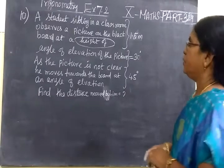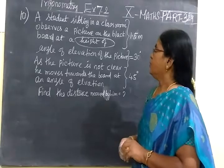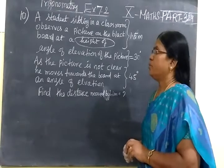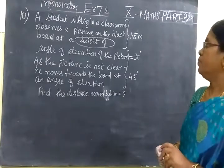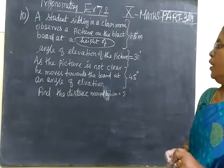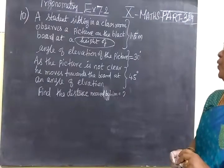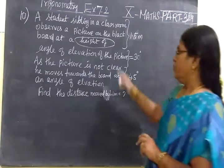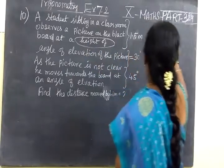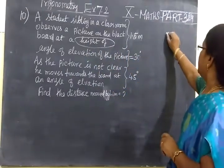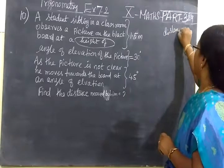Now we see part 329. A student sitting in a classroom observes a picture on the blackboard at a height of 1.5 meters. Why I circled now? Already I told you distance. Distance is different from height.